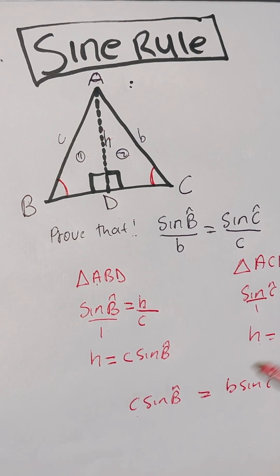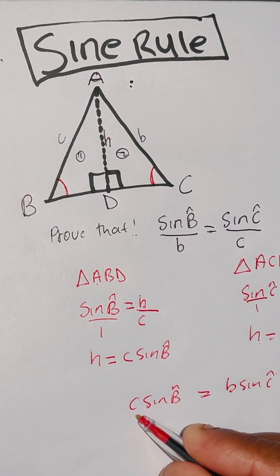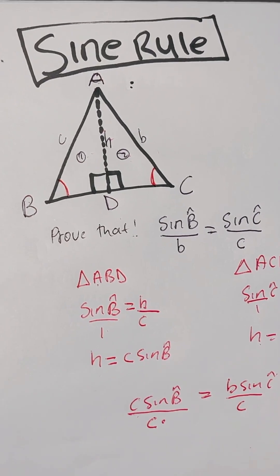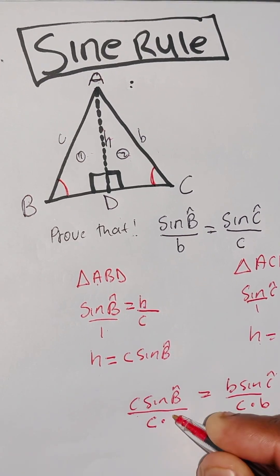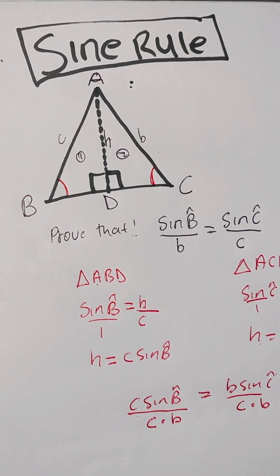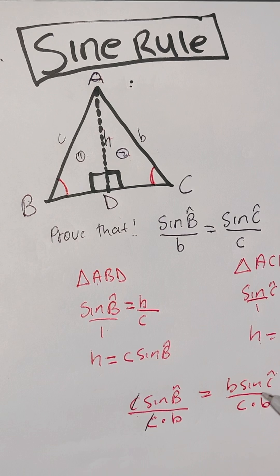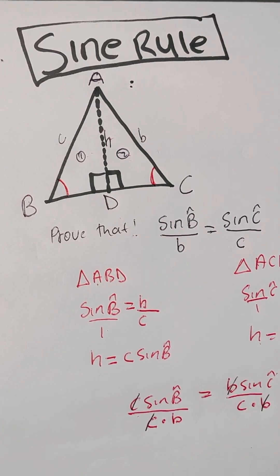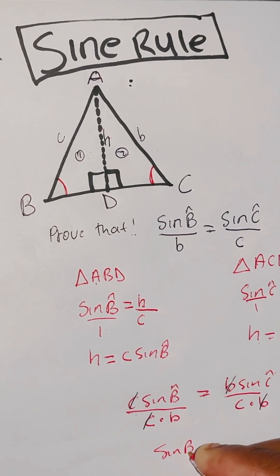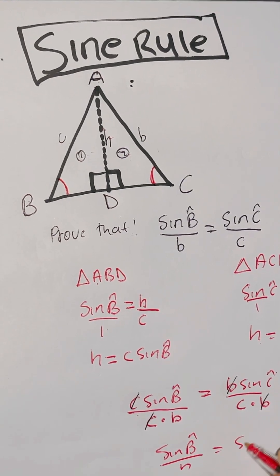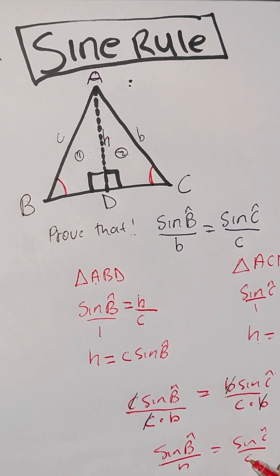Now you want to remain with B on top and C on top, you're going to divide by C both sides, and then you also divide by B both sides. And this will be cancelled. C and C cancelled, B and B cancelled. And then you remain with sine angle B divided by small letter b equals sine angle C divided by small letter c.